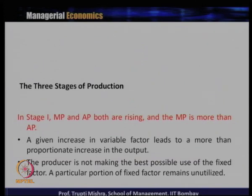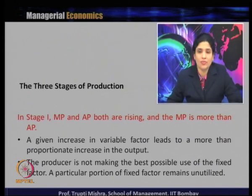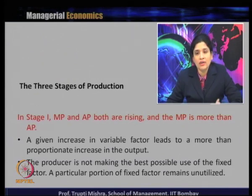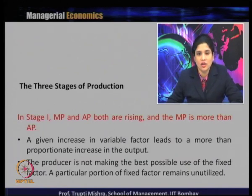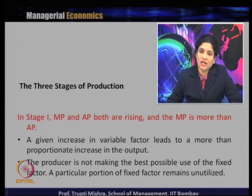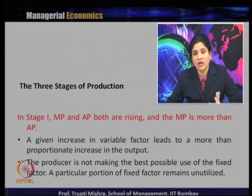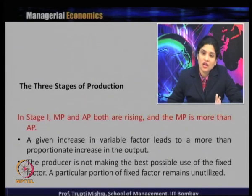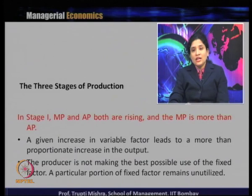In Stage 1, marginal product and average product are both increasing, and marginal product is greater than average product. A given increase in the variable factor leads to a more than proportionate increase in output, meaning each additional unit of labor contributes more to production. However, the producer is not making the best possible use of the fixed factor — a portion of the fixed factor remains unutilized. For example, with only one worker on a photocopier machine, the machine can only run for 8 hours, so the machine is being underutilized.